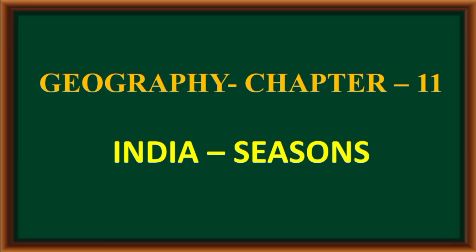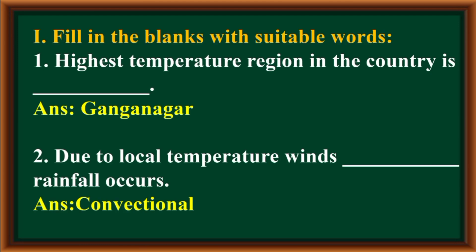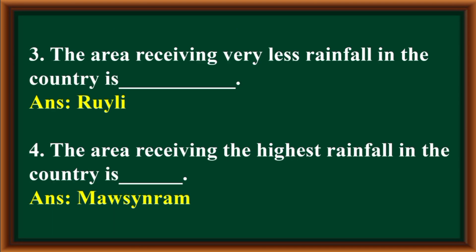Class 10 Standard Social Science Geography, Chapter 11: India Seasons. First main: Fill in the blanks with suitable words. The highest temperature region in the country is Sri Ganga Nagar. Due to local temperature winds, convectional rainfall occurs. The area receiving the very least rainfall in the country is Ruili. The area receiving the highest rainfall in the country is Mawsynram.